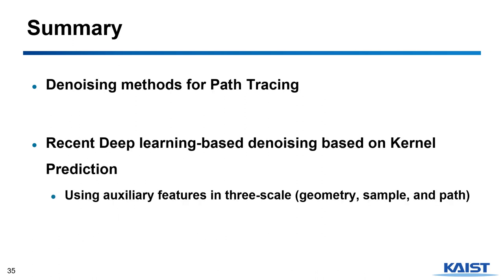Let's wrap up this lecture. I introduced three denoising methods for path tracing based on kernel prediction, each using a different scale of auxiliary features. There is further research about Monte Carlo denoising, and due to the time limit I only skimmed the surface of it. If you are more interested in denoising, the papers and links are posted in the references. Thank you for listening, and good luck with the exam and presentation. Goodbye.